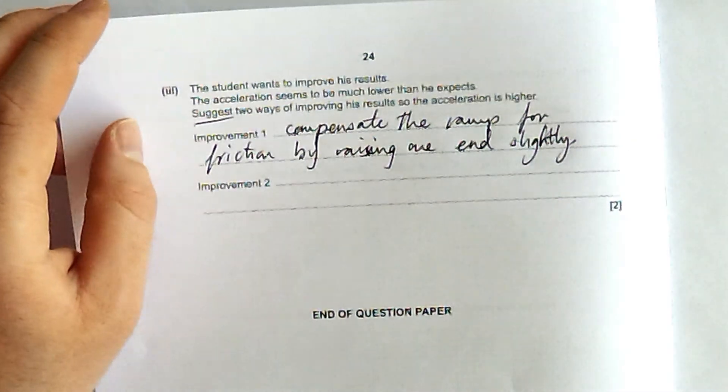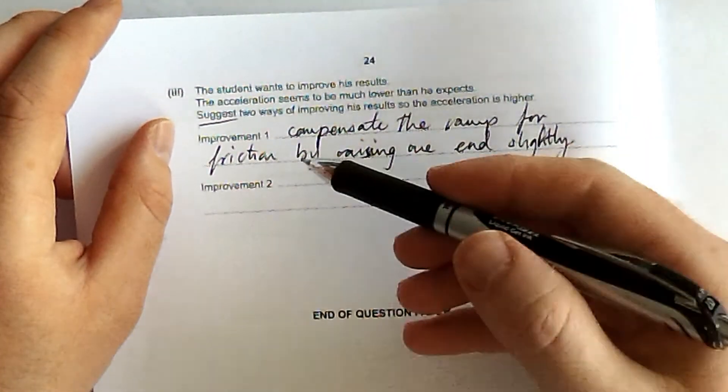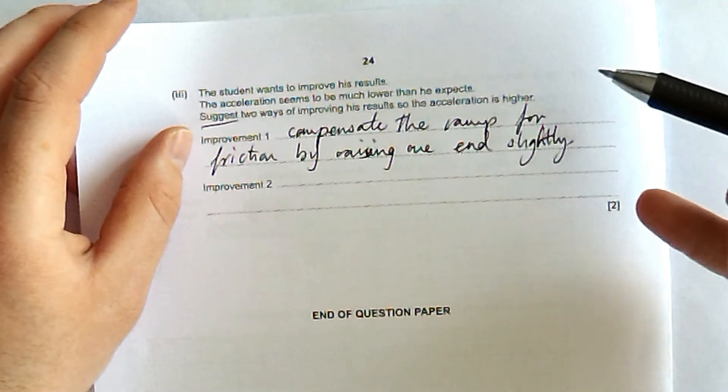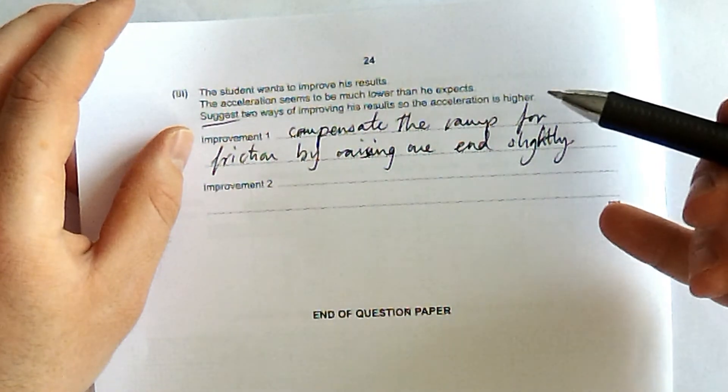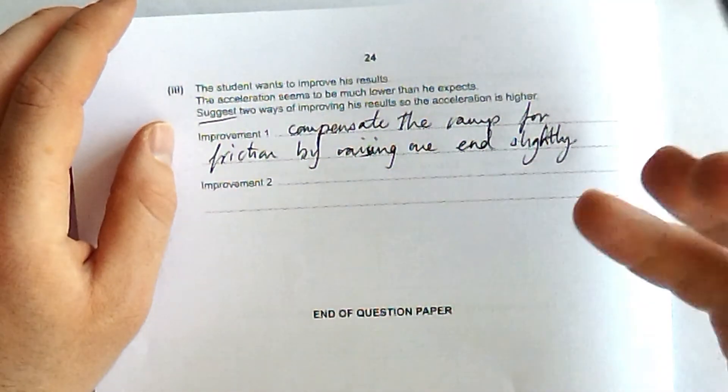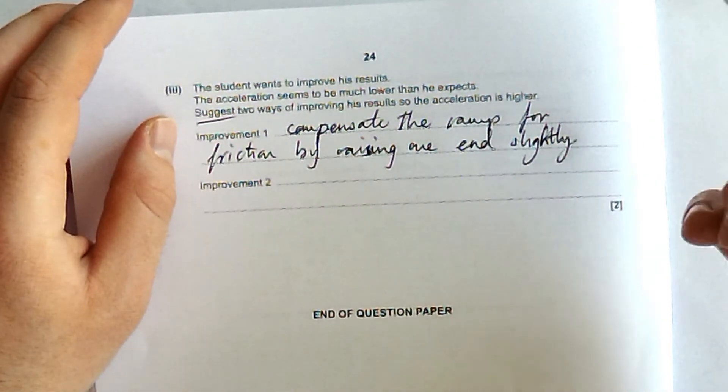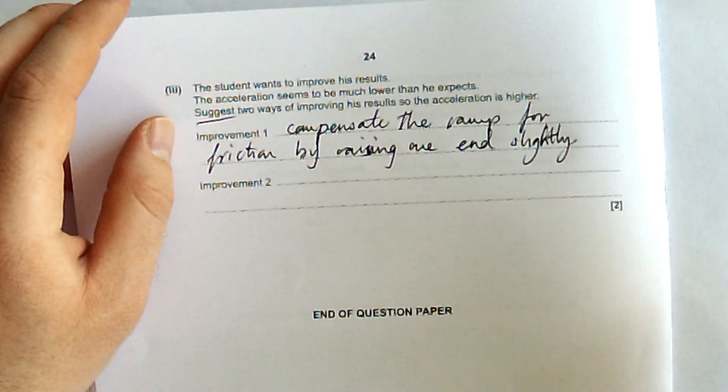Or a different way of compensating the ramp for friction, maybe using a linear air track or something like that. But mark scheme, this one is a specimen paper, so I'm thinking that in review they might actually get rid of some of these things and be more likely to accept things like using a lower mass of a trolley.